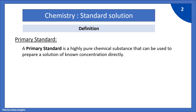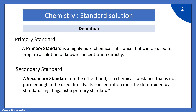A primary standard is a highly pure chemical substance that can be used to prepare a solution of known concentration directly. A secondary standard, on the other hand, is a chemical substance that is not pure enough to be used directly, but its concentration must be determined by standardizing it against a primary standard.